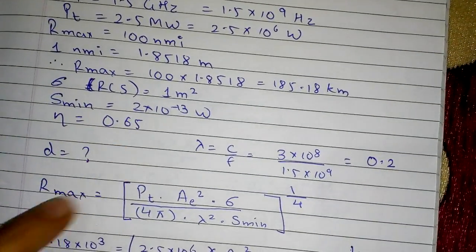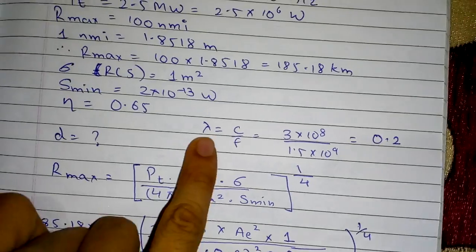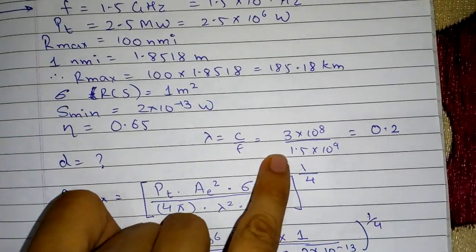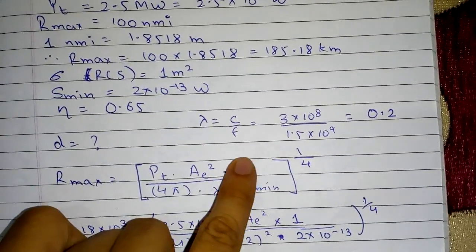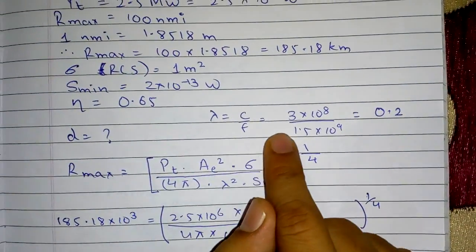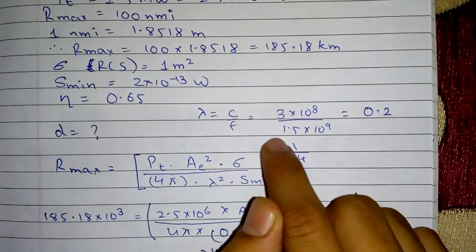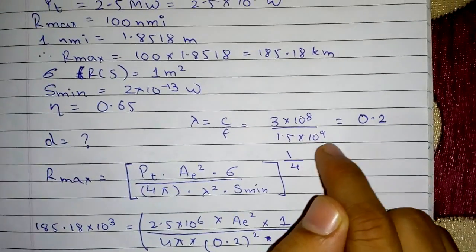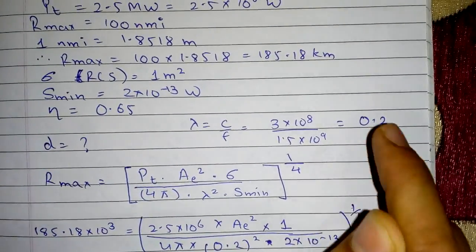Now we know that lambda is equal to C by f. Why we are calculating lambda we will see it soon. So λ = C/f, which means C is 3×10^8 upon f is 1.5×10^9 which gives me answer as 0.2.